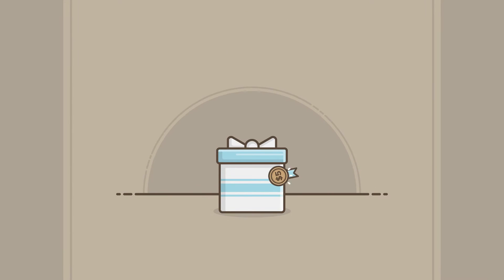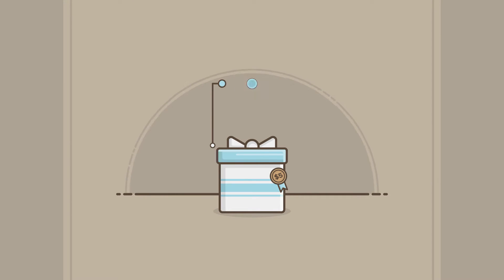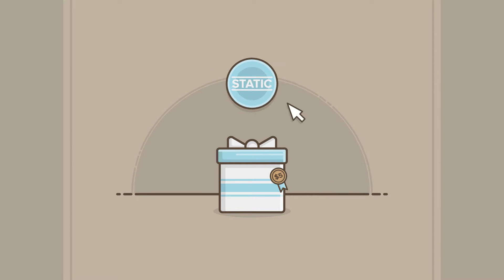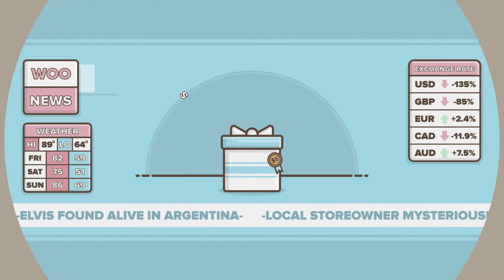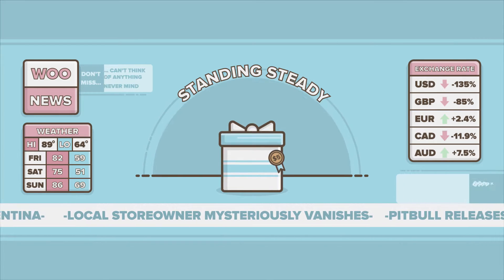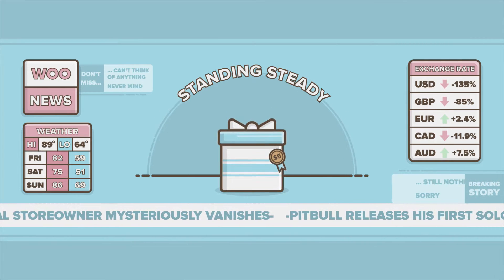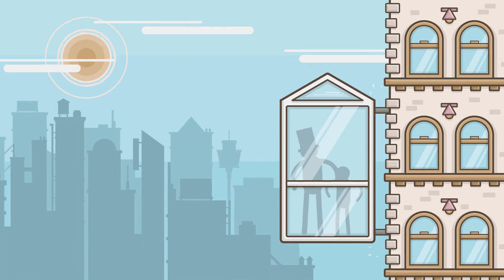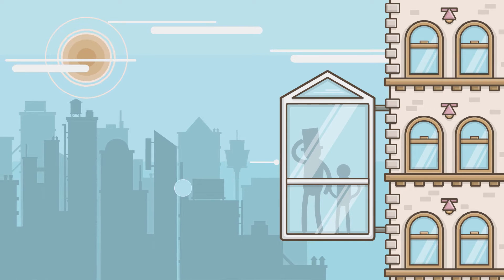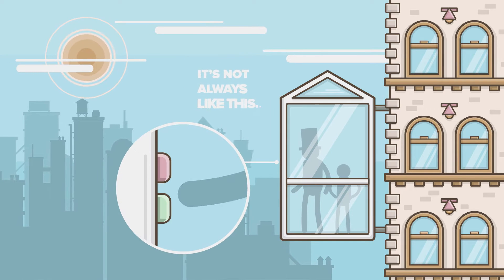When it comes to pricing your products, you might think there's only one option: a static price. Static pricing does what it says — it's pricing that doesn't change no matter what conditions you throw at it. Like a broken elevator, it's not going anywhere regardless of what button you push.